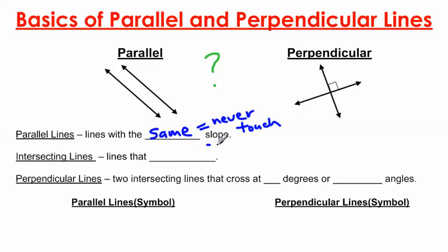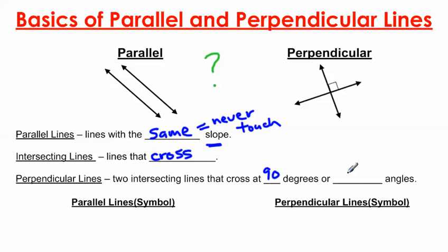If you want to see a video that talks more about the slope of parallel and perpendicular lines, I have a separate video that covers that — I recommend watching it after this one. Now, intersecting lines are lines that cross or intersect. A lot of people think that's the definition of perpendicular lines, but perpendicular lines are specifically two intersecting lines that cross at 90 degrees, or at a right angle.